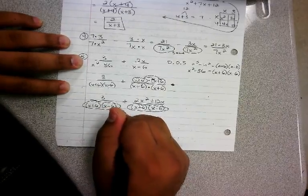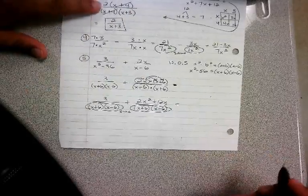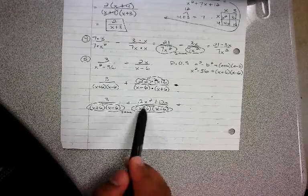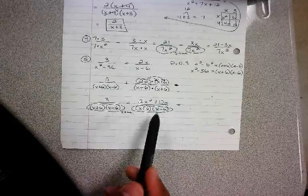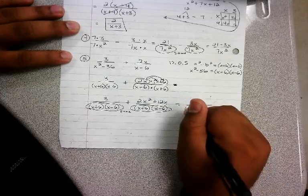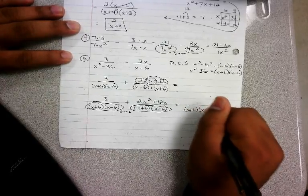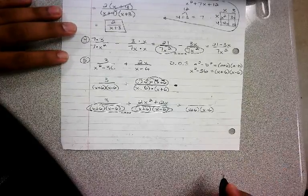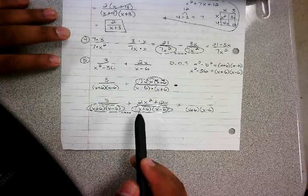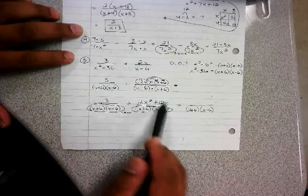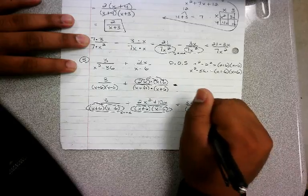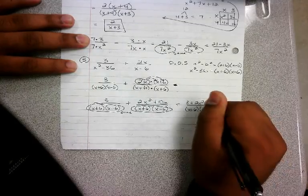So they're the same, so now I can write out my answer. My denominators are the same now, so I can write the answer - x plus 6 times x minus 6. This is just like adding, so this is your a, this is your b. So 3 plus 2x squared plus 12x.